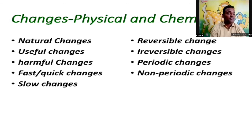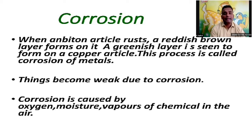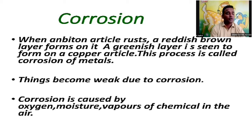We can say there are physical changes and chemical changes. Physical changes include melting and boiling. For chemical changes, there is corrosion. Corrosion is one of the important examples of chemical changes. When an article works with air, a reddish-brown layer or greenish layer forms on a copper article — this process is called corrosion of metal.